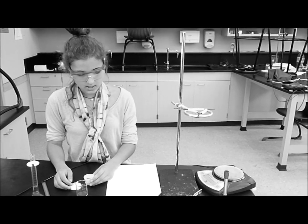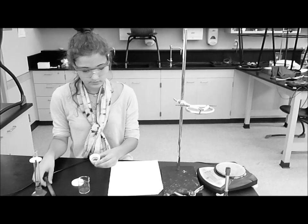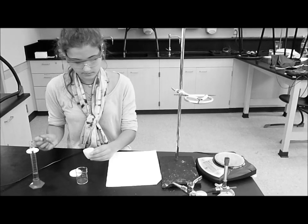Once the sample has achieved constant mass, transfer the brown solid to a clean and empty 50 milliliter beaker.